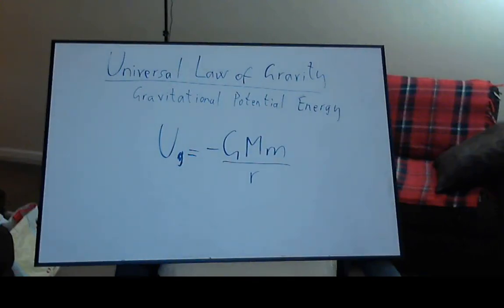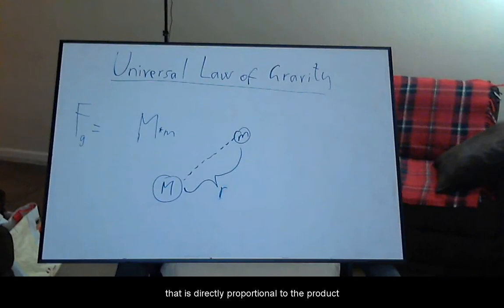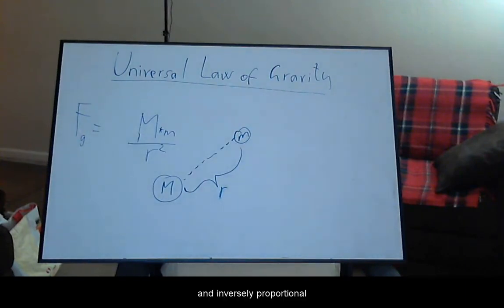Let's talk about gravitational potential energy in the universal law of gravity treatment. Recall that the law states that two masses separated by distance r are attracted to each other with a force that is directly proportional to the product of their masses and inversely proportional to the square of the distance between them.